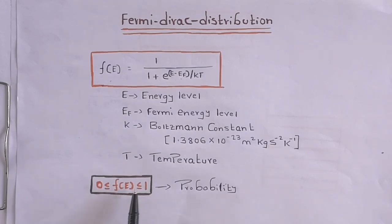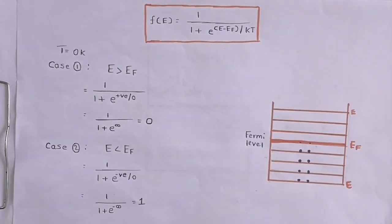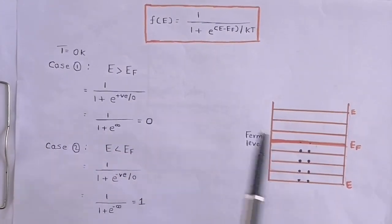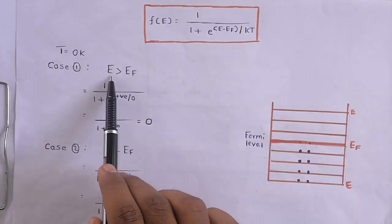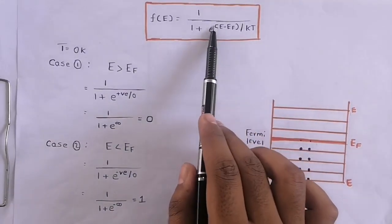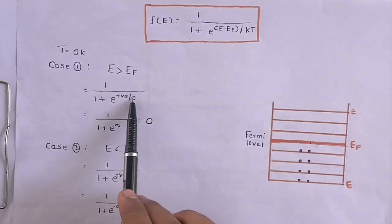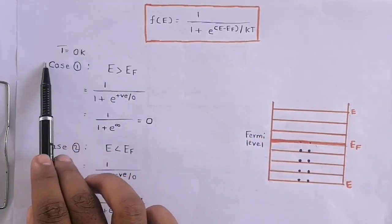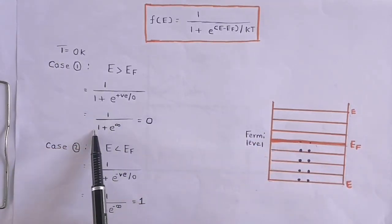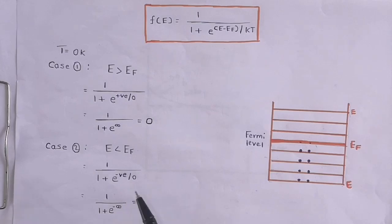Now let's find the probability of finding an electron above and below the Fermi level, assuming T = 0 Kelvin. Case 1: if the energy level is above the Fermi energy (E > E_F), then f(E) = 1 / (1 + e^((E − E_F) / kT)). Since E − E_F is positive and kT = 0, this becomes 1 / (1 + e^∞) = 0, meaning the probability of finding an electron above the Fermi level is 0.